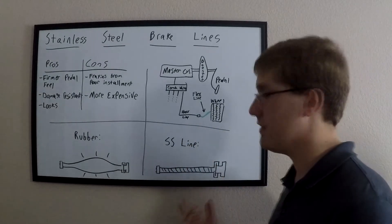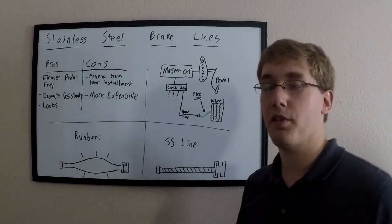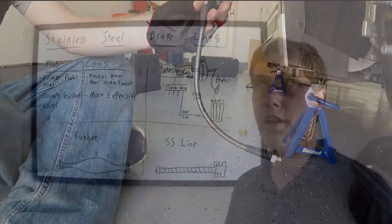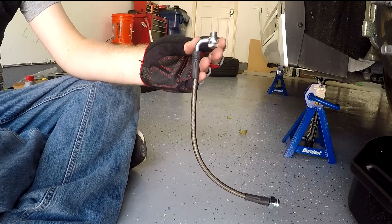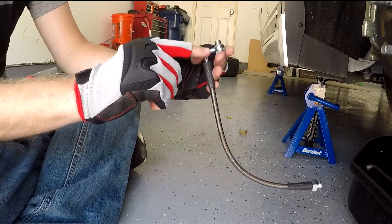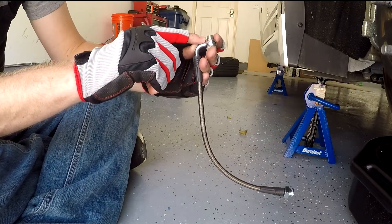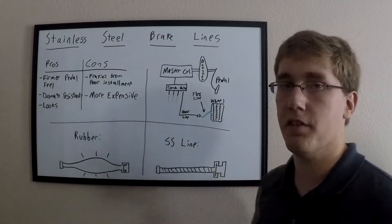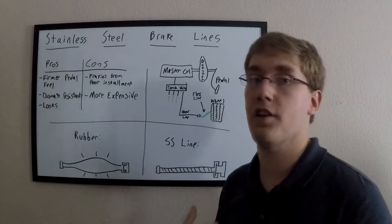So the whole idea behind stainless steel lines is you want to reinforce those lines a little bit while still keeping them flexible. This is accomplished by using a Teflon core, and then they wrap it with a stainless steel mesh, and this reinforces the lines a little bit, prevents them from being able to expand, which means you're applying more pressure on the actual cylinder and doing more work to actually stop the car.